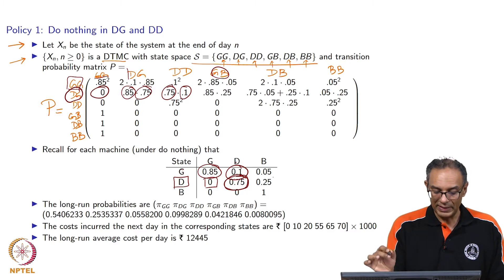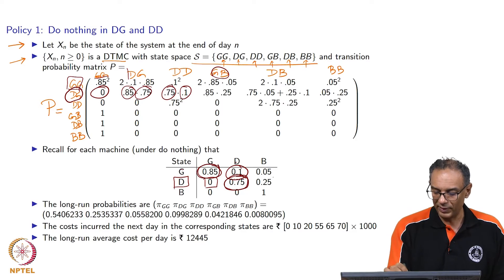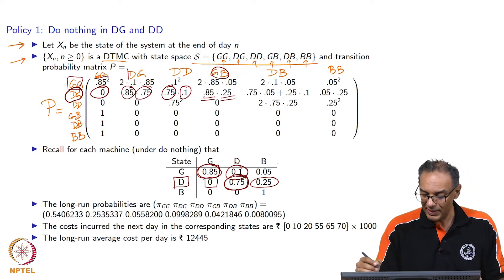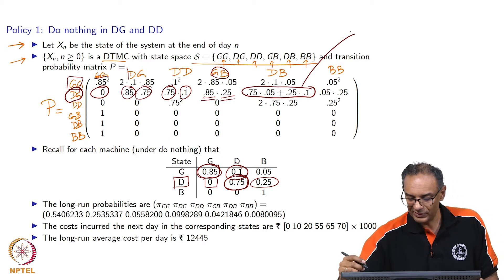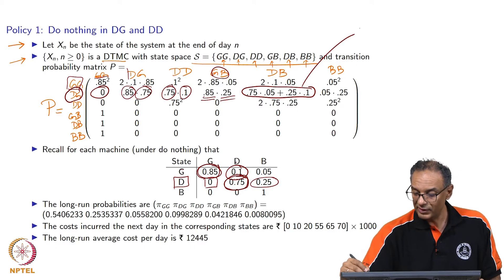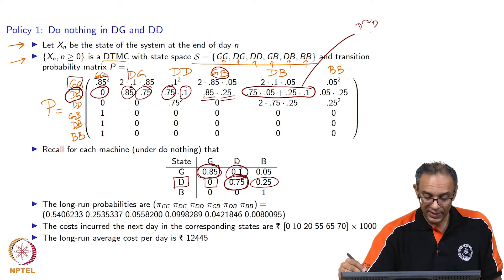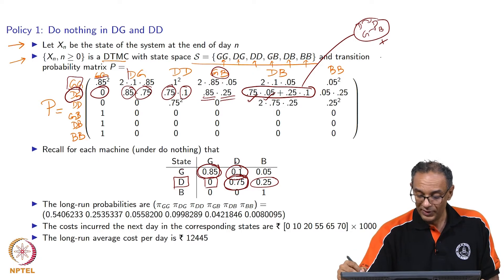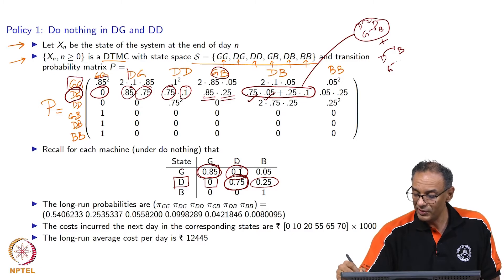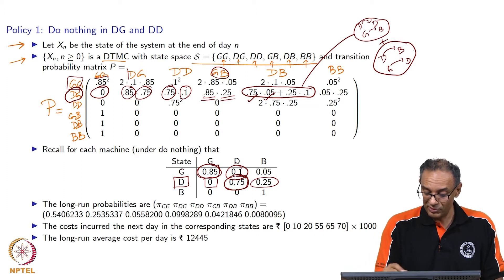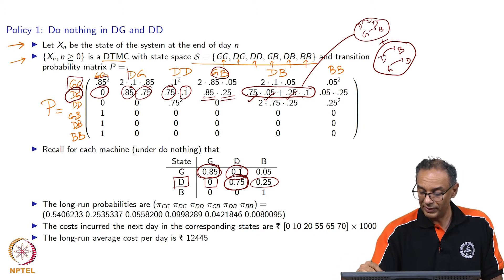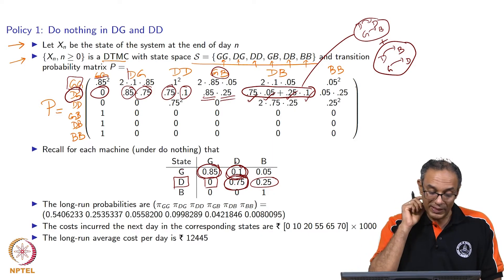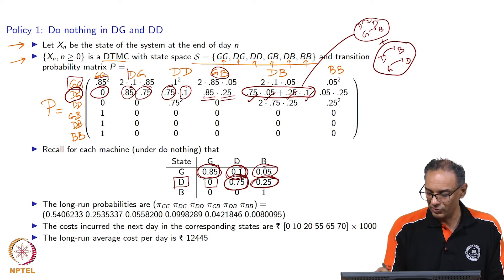From DG you can go to GB: the good machine remains good with probability 0.85 and the deteriorated machine became bad with probability 0.25. DG to DB requires some explanation — two things could have happened. Either the deteriorated machine continued to be deteriorated and the good machine became bad, which is 0.75 times 0.05, or the deteriorated machine became bad and the good machine became deteriorated, which is 0.25 times 0.1. So you have two terms that add up. Finally, DG to BB means both machines become bad, so that is 0.05 times 0.25.